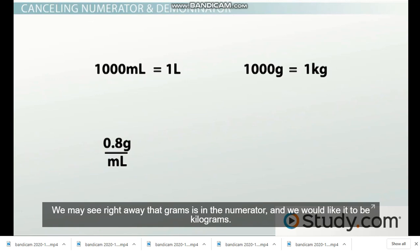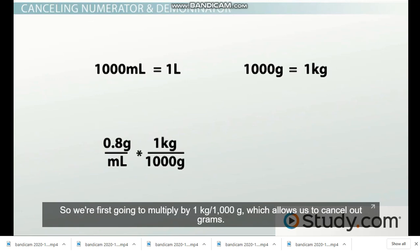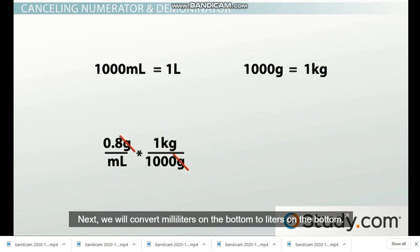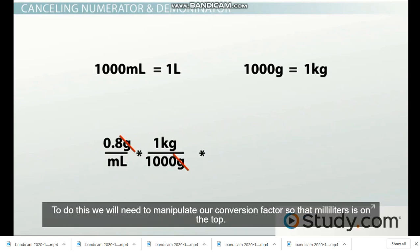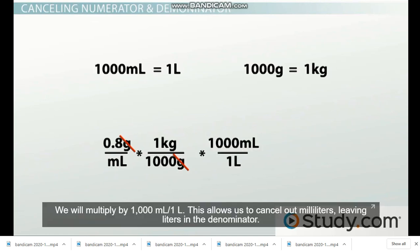So we're first going to multiply by 1 kilogram over 1,000 grams, which allows us to cancel out grams. Next, we will convert milliliters on the bottom to liters on the bottom. To do this, we'll need to manipulate our conversion factors so that milliliters is on the top. We will multiply by 1,000 milliliters over 1 liter. This allows us to cancel out milliliters, leaving liters in the denominator.